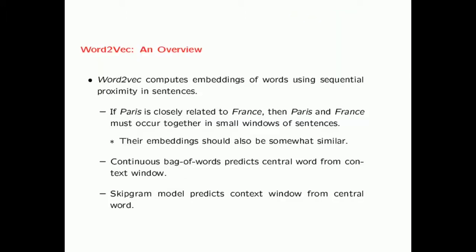Word2Vec computes the embeddings of words using sequential proximity in sentences. So Word2Vec computes embeddings that are somewhat sensitive to the linguistic structure of the data. For example, if Paris is closely related to France, then Paris and France must occur together in small windows of sentences, and so their embeddings should also be somewhat similar.